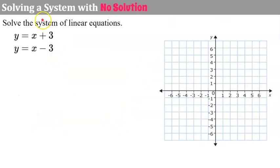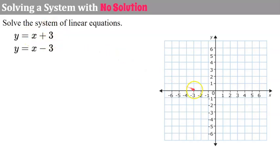Let's solve one together. I'm going to show you two different ways to solve this — I'm going to graph it so you can see it visually, and I'm also going to solve it algebraically. It will be a system that ends up having no solution. So I'm given my two equations. My first equation has a slope of one and a y-intercept of three. I'll graph the y-intercept, rise and run one, and connect. That's my first line.